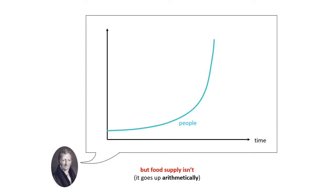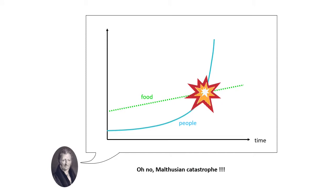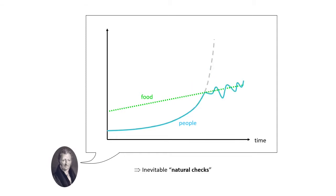But food supply doesn't work like that. It might go up arithmetically, but it's not like fields have baby fields who have even more baby fields. So there'll always come a point where there are too many people and not enough food. And at the point where the food runs out, there'll be some sort of Malthusian catastrophe. He called these natural checks, and these inevitable natural checks would limit population growth.